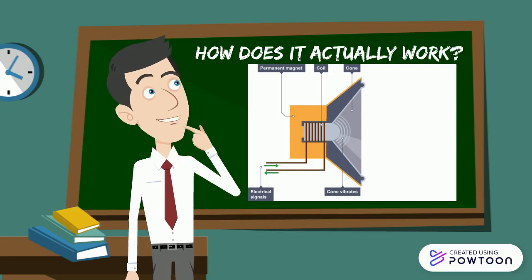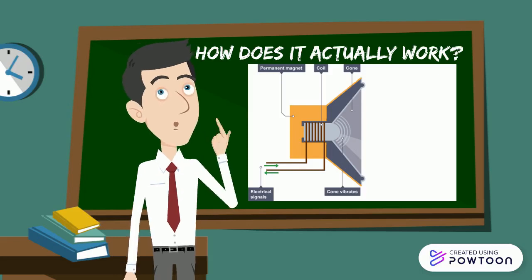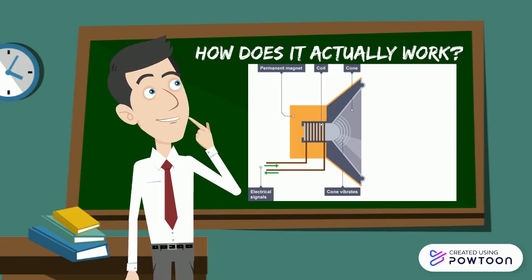Thirdly, the current is made to flow in the opposite direction. After that, the electromagnetic field's direction changes. Fifth, the cone is now being pulled back in by the force.